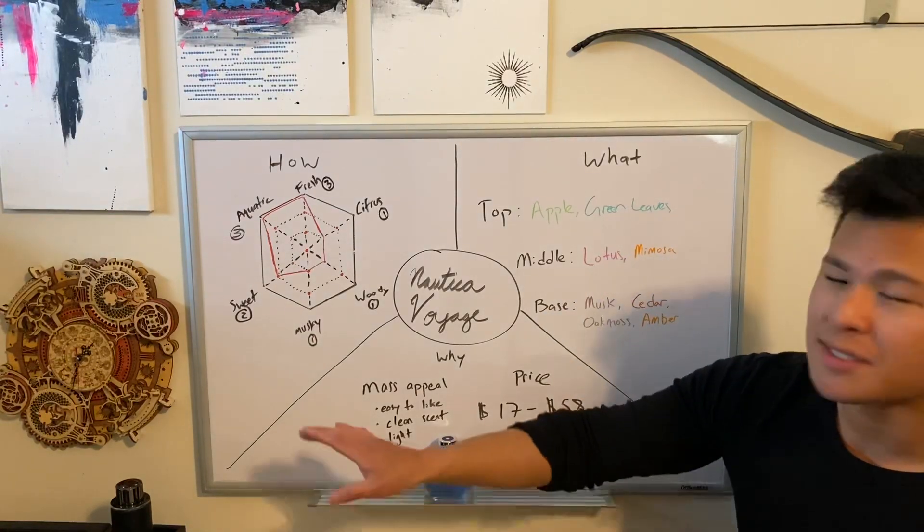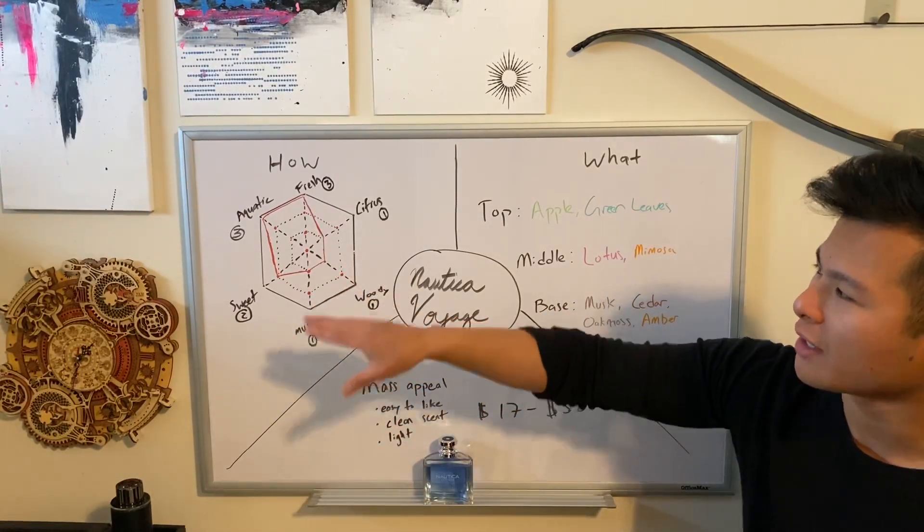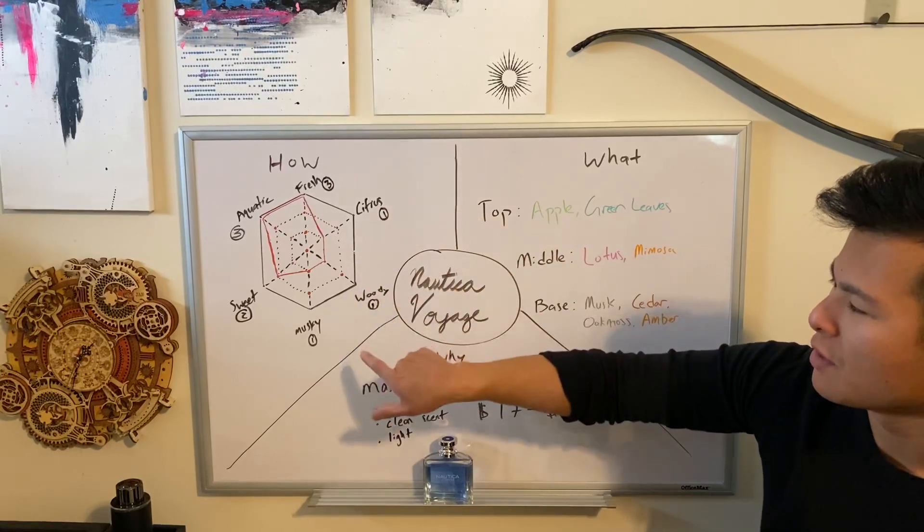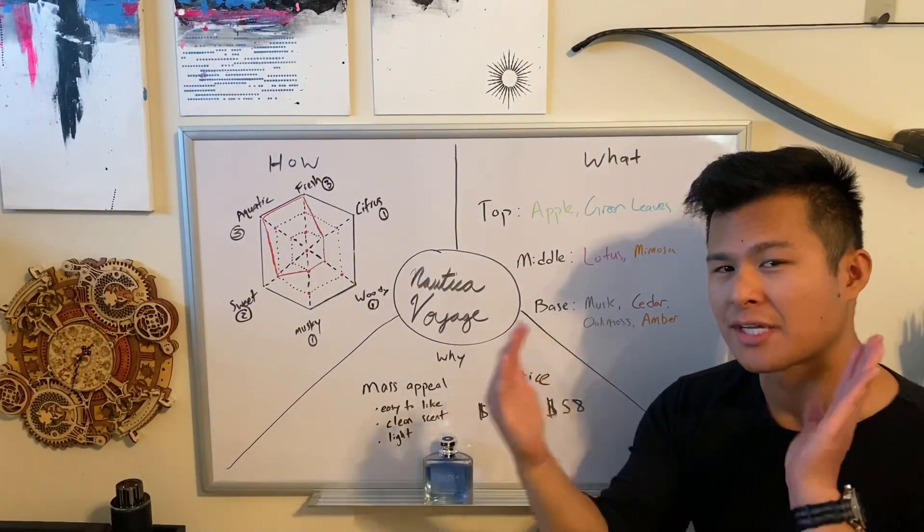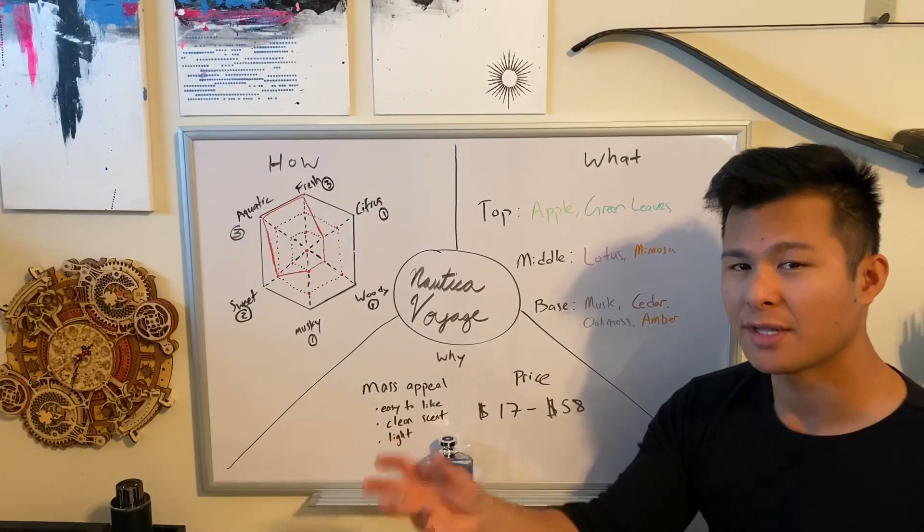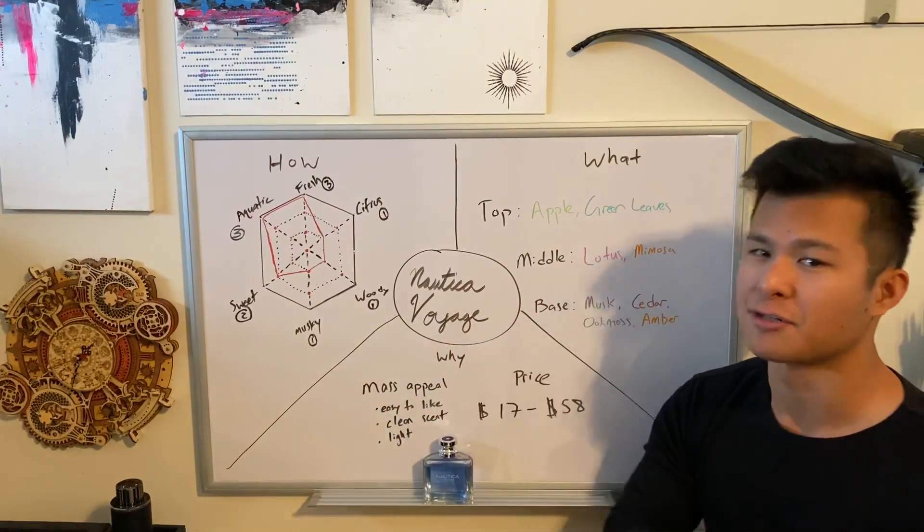The points to consider are the aquatic, the freshness, citrus, woody, musky, and sweet. They fall under a continuum of zero to three, three being the highest and zero being nothing at all.